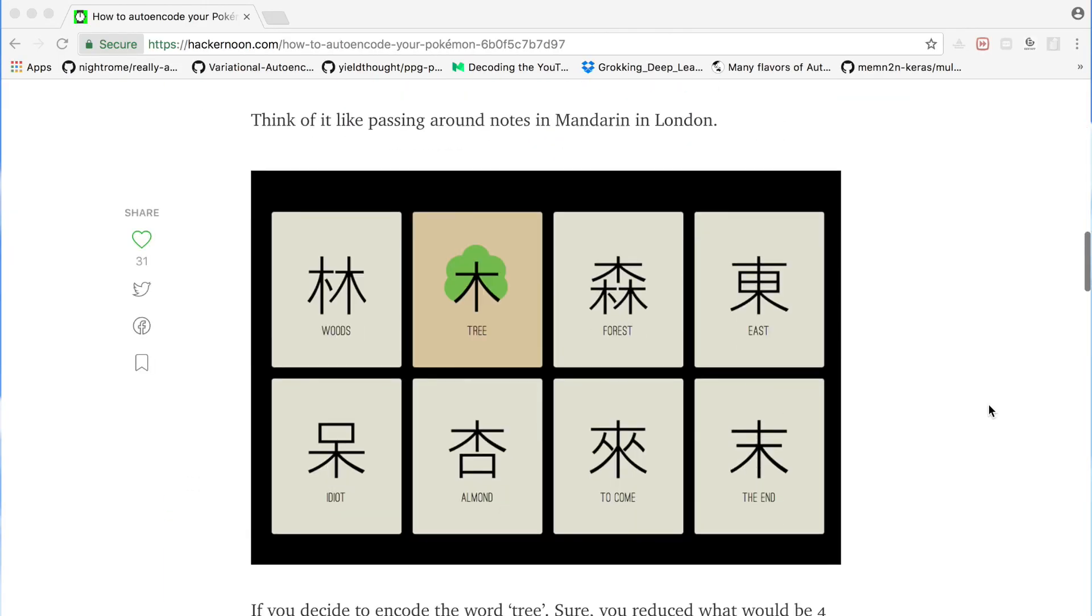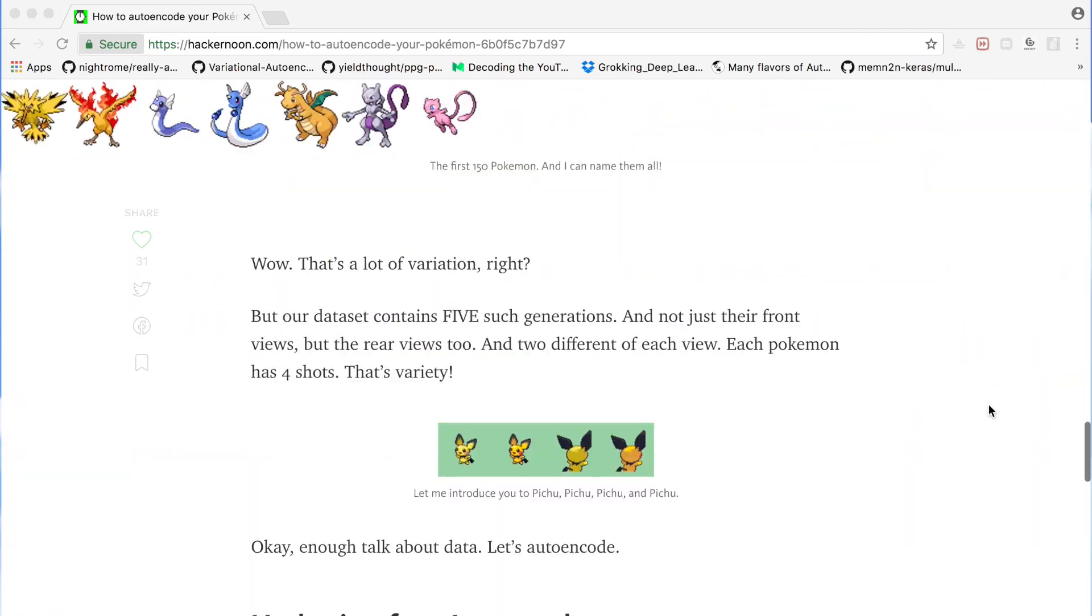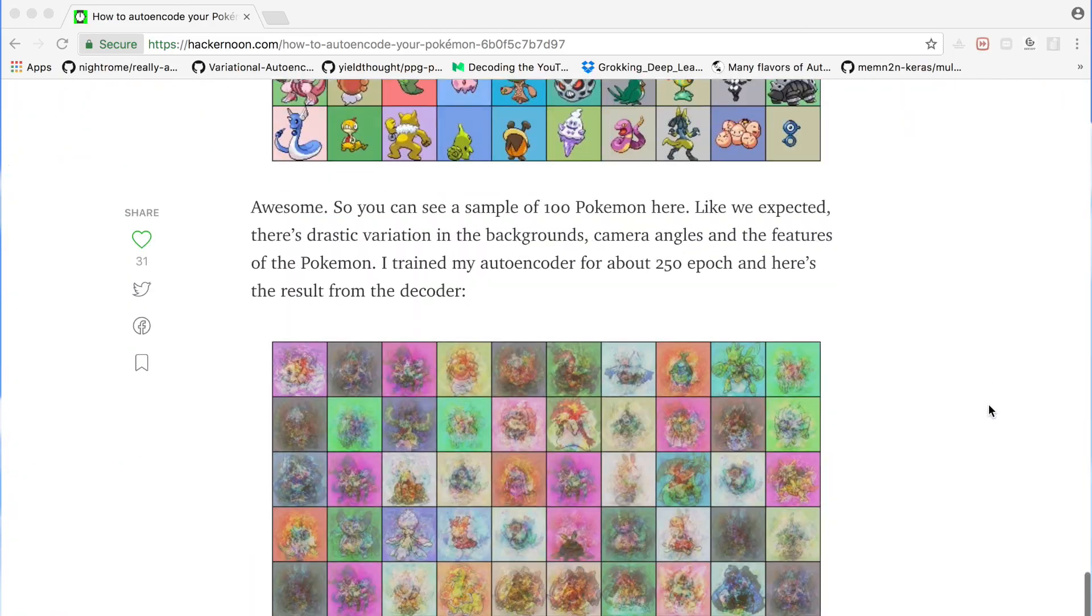And the runner-up is Niaz Mohamed. Niaz used a VAE to generate Pokemon and wrote up a really cool blog post on his whole process. You guys inspire me, and I vow to you.